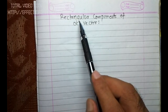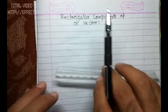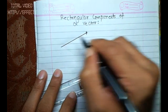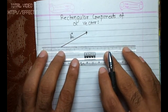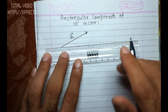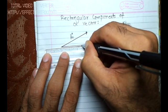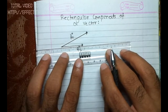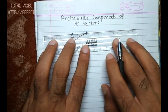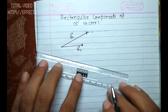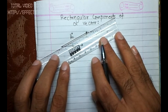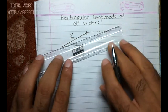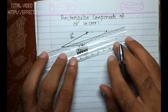We're going to understand rectangular components of a vector. Let us begin by drawing two vectors — this is vector a1 and this is vector a2. To get the resultant of these two, I need to complete a parallelogram. I'll draw a line parallel to vector a2 and then a line parallel to vector a1. I have completed the parallelogram, and the diagonal of the parallelogram is the resultant.